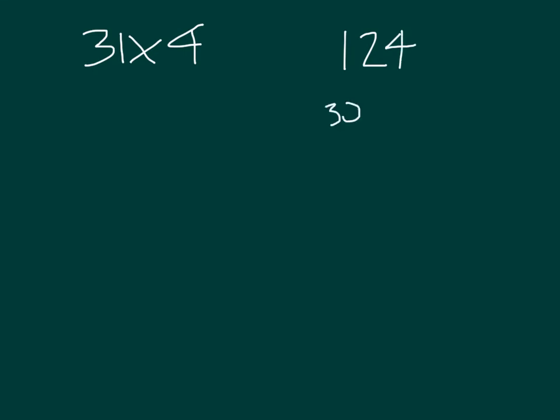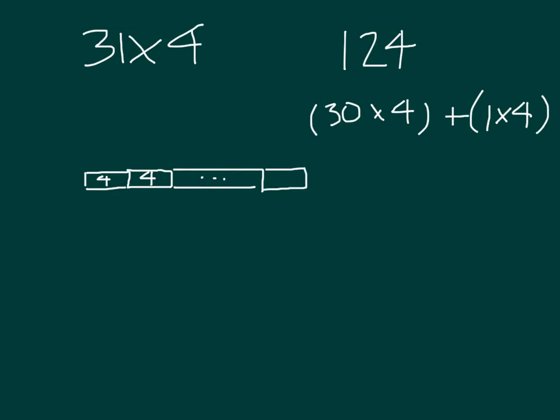Again, that was 30 times 4, and just one more 4. Let's represent our thinking with a tape diagram. We'll go ahead and model 30 times 4. And so 31 times 4 would just be one more 4.